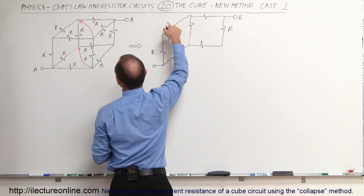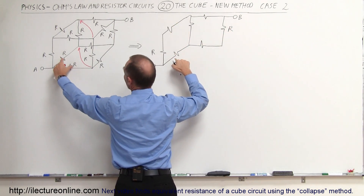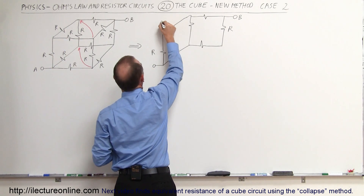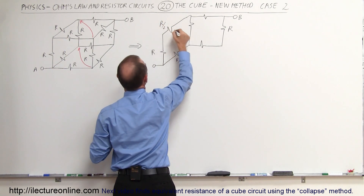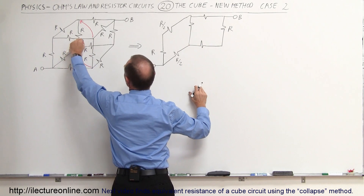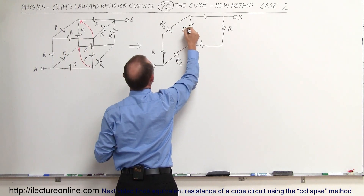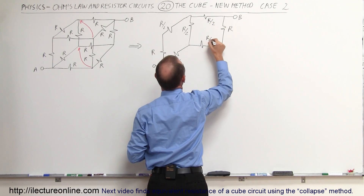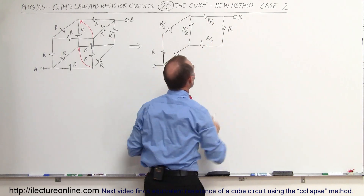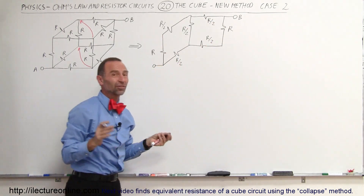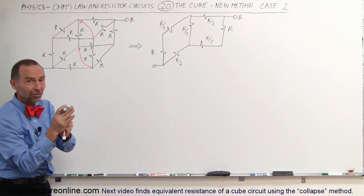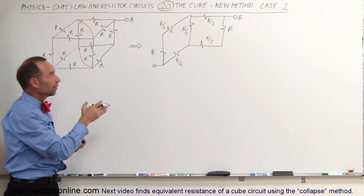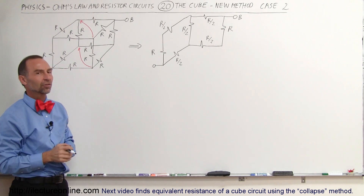This resistor and this resistor are the combination of two resistors, so this is R/2. These two vertical ones also combine, so this becomes R/2 as well. So these five remaining resistors are simply the collapse of two resistors onto each other — same resistance, they act like parallel resistors — so the equivalent resistance is half the original resistance, R/2.